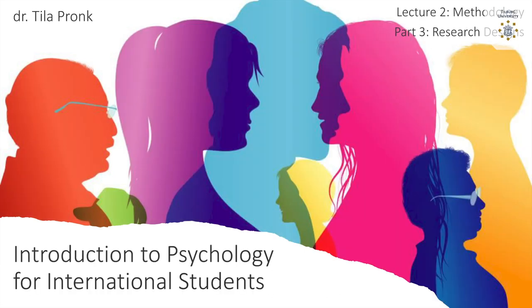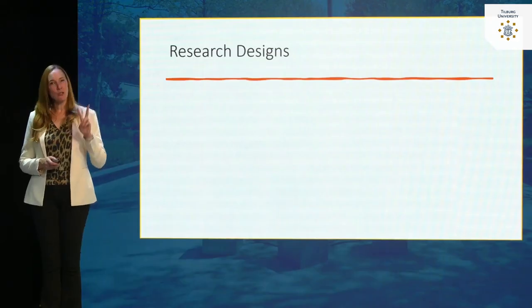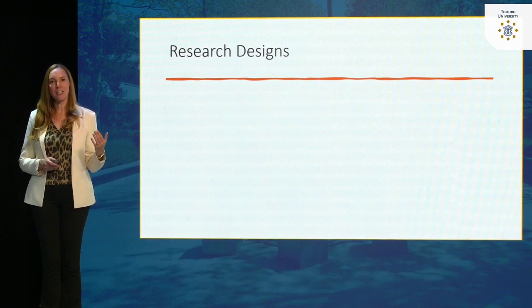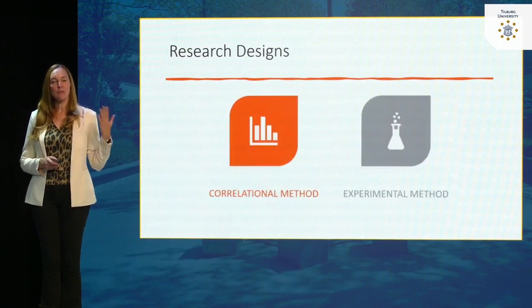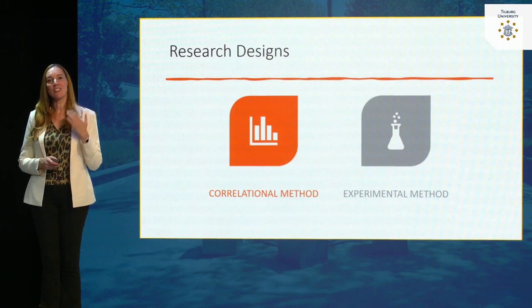This is part three of lecture two. In this final part of the lecture, we're going to be talking about different research designs. There are basically two research designs I want to talk about today: first, the correlational methods, and secondly, the experimental method.